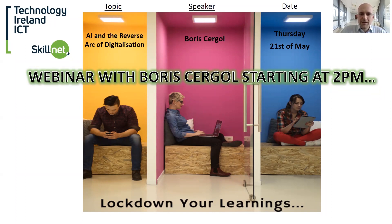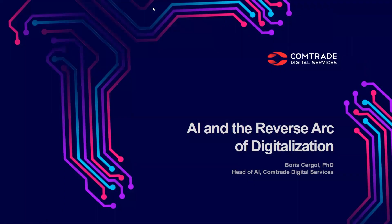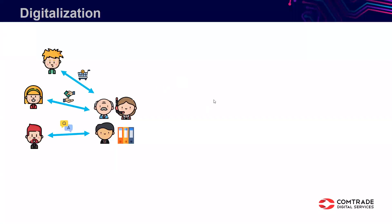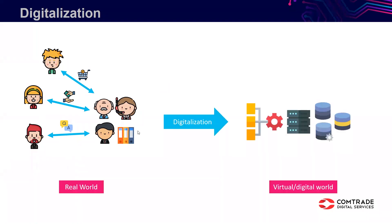Bear with me as I share my screen and take you through my presentation on AI and the reverse arc of digitalization. Let me first start by presenting to you this model company. It has three employees and some customers making various interactions with the company. Since they're in business, they also have some files and some data. Basically, the whole process of digitalization is taking this real-world company and its customers and trying to move it into a kind of virtual digital world.